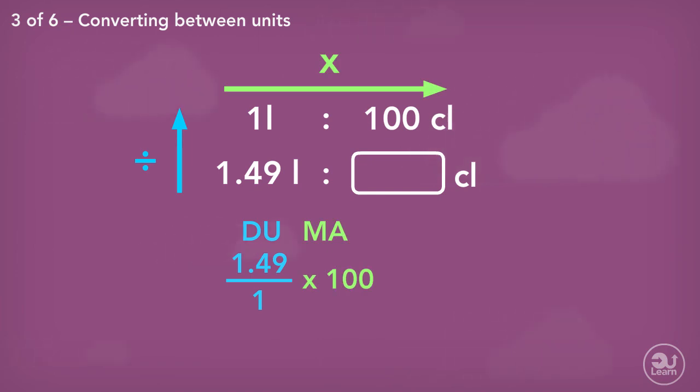Divide up, multiply across. 2.6 pints is equal to approximately 149 centilitres.